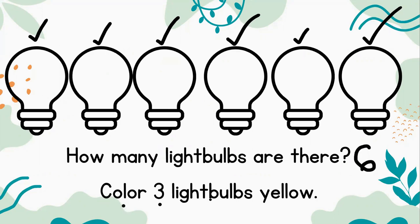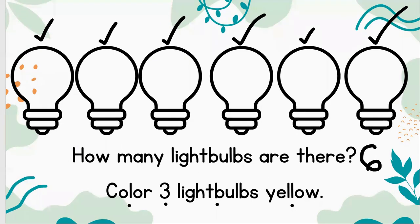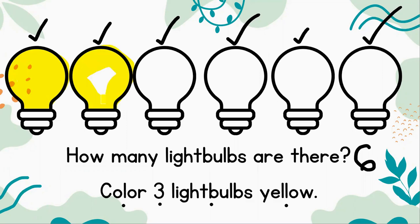Color three light bulbs yellow. Okay, I want you to count with me. Here we go: one, two, three. And our third light bulb — three. Three out of six light bulbs are yellow.